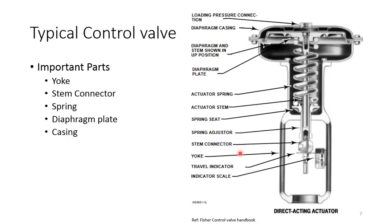This is a typical actuator taken from the Fisher Control Handbook. Important parts are: the yoke, stem connector, spring, diaphragm, diaphragm plate at the bottom, and the casing. This is a direct-acting actuator — air is supplied from the top, fills the area, and the pressurized air pushes the diaphragm plate downwards, compressing the spring.